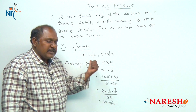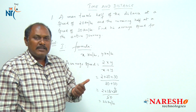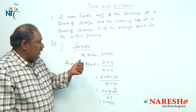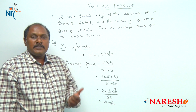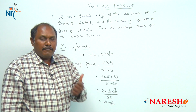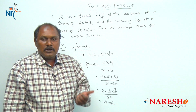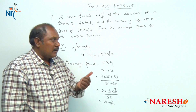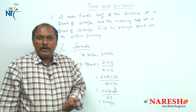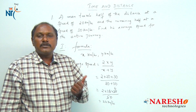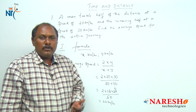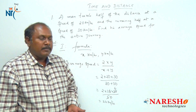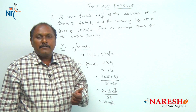Now, can we solve all average speed problems using this formula? No, because this formula is only applicable when the man travels two equal distances. But if he does not travel two equal distances, then how would you solve the problem? So let us look into the second method of solving this without using a formula.